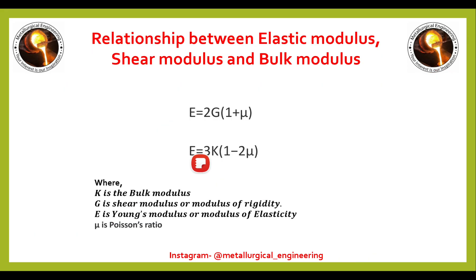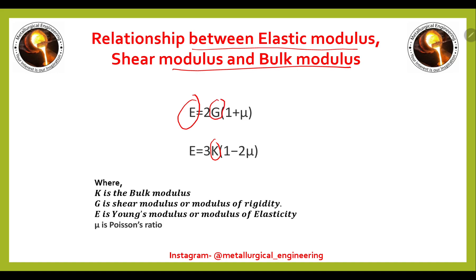Now we will see the relationships between elastic modulus, shear modulus, and bulk modulus. E is the modulus of elasticity (Young's modulus), K is the bulk modulus, and G is the shear modulus or modulus of rigidity. The relationship between E and G is: E = 2G(1 + μ), where μ is Poisson's ratio. And E = 3K(1 − 2μ) is the relationship between modulus of elasticity and bulk modulus.